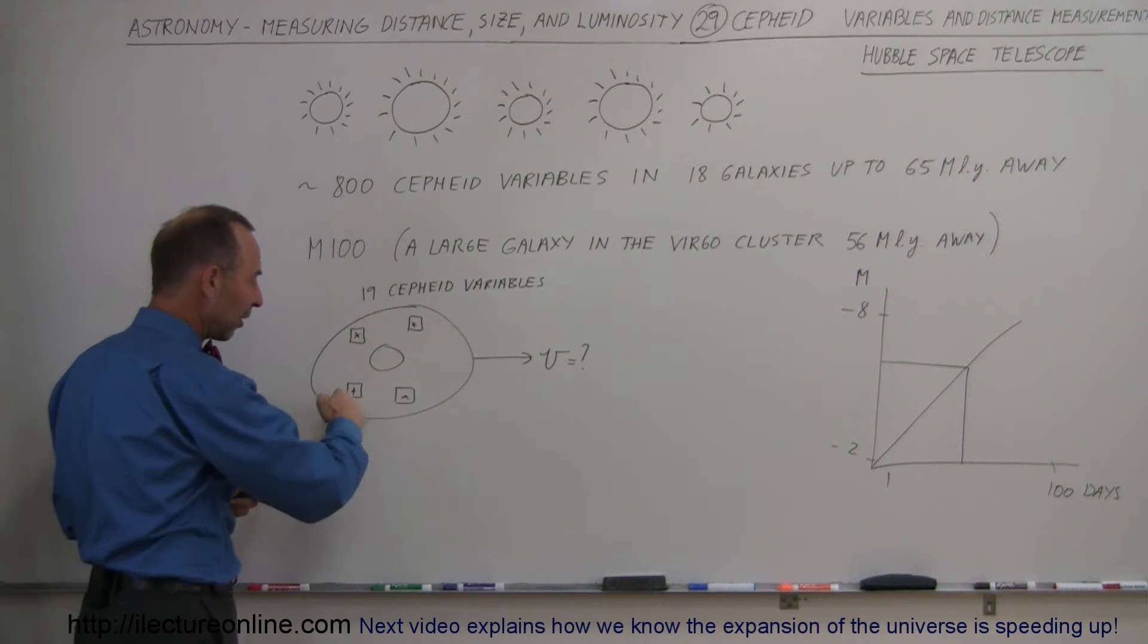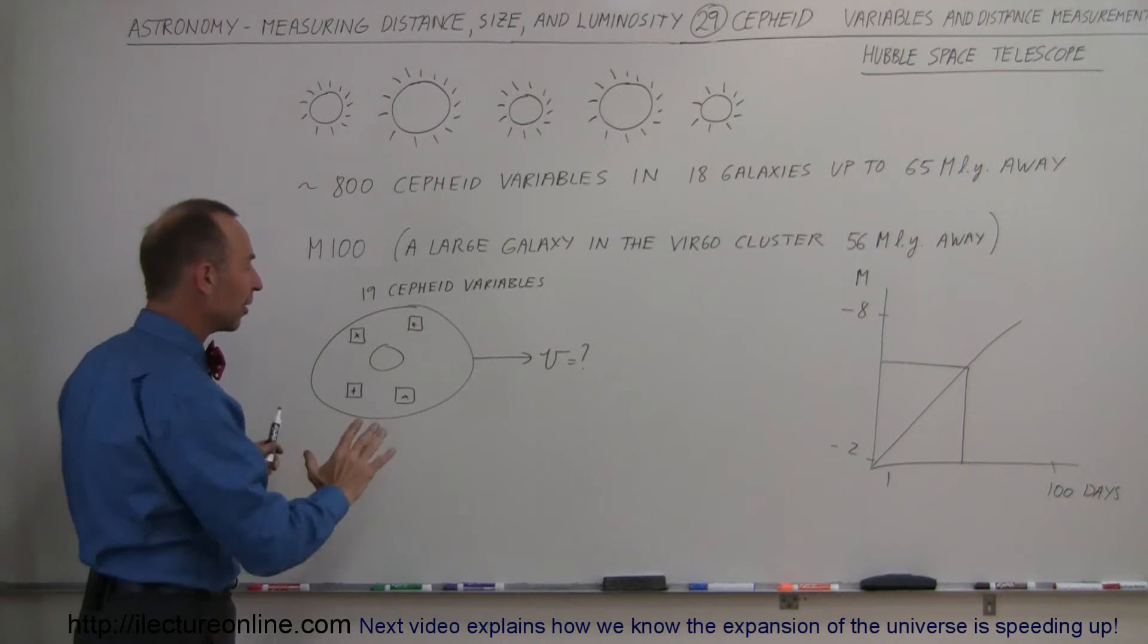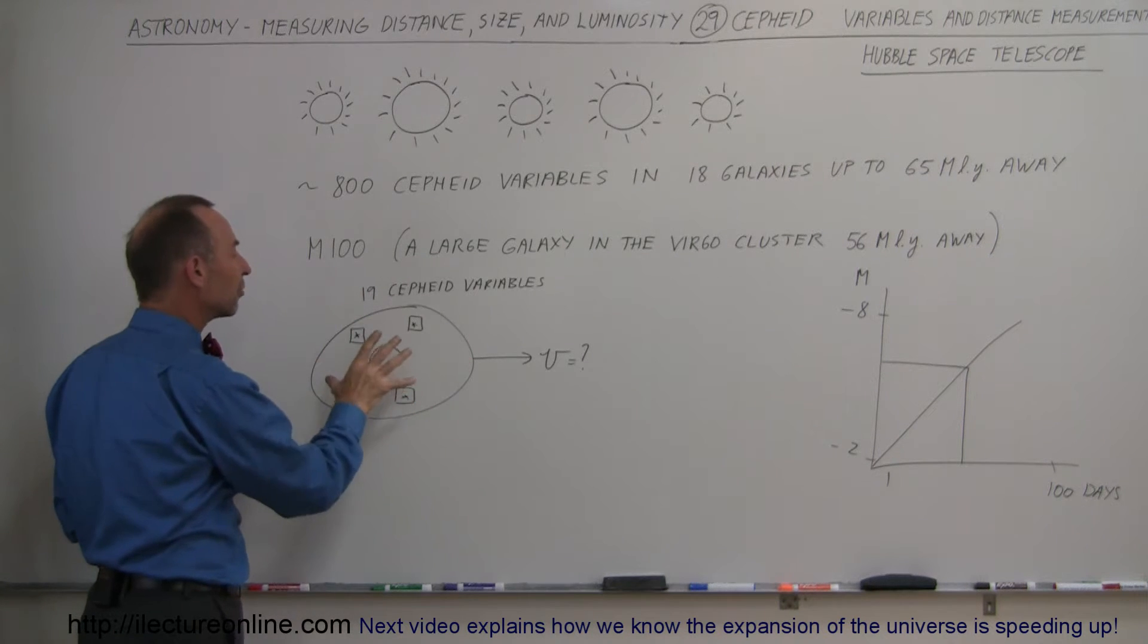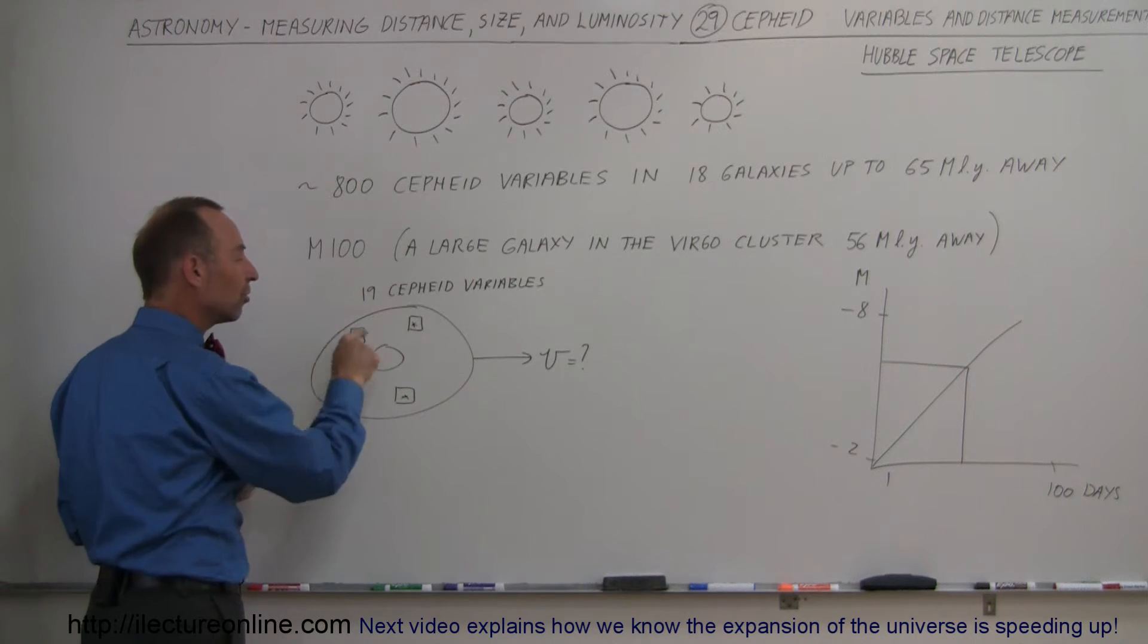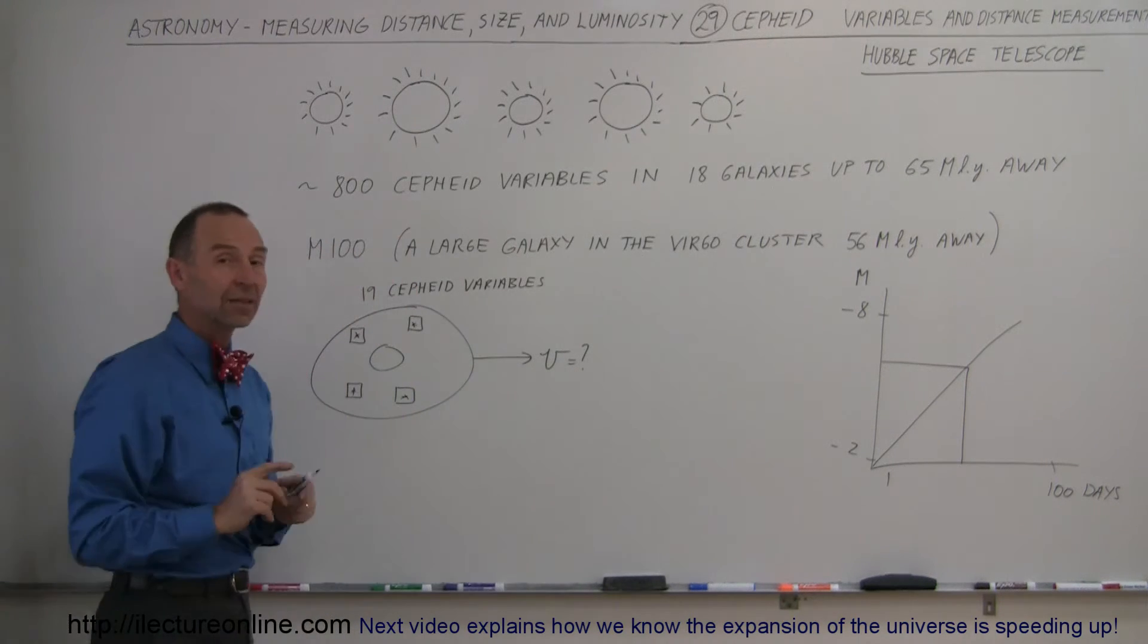Now if the Cepheid variables are embedded in a galaxy, and we take a number of readings over a number of Cepheid variables and average it all out, that would give us a fairly accurate reading to the distance of that galaxy. The next thing we do is measure the recessional velocity of the galaxy.